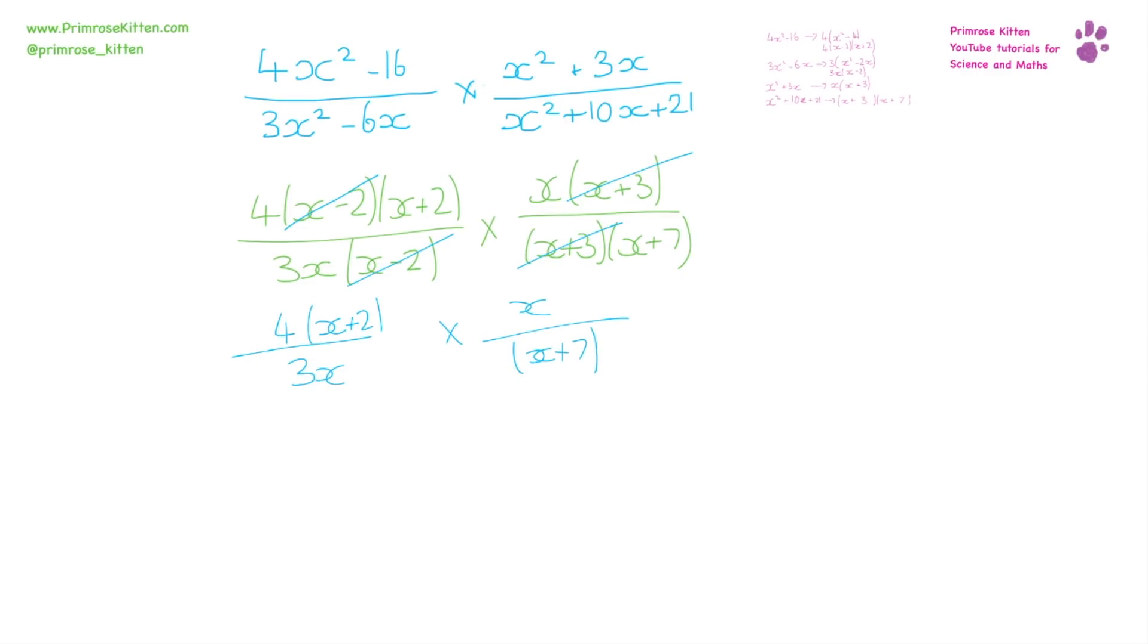Now because we're just multiplying, we can extend this little line and multiply them, so we have 4x(x + 2) over 3x(x + 7).